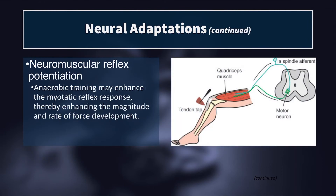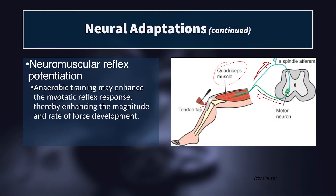We also see improvement in neuromuscular reflexes. The myotatic or stretch reflex enhances activation of agonist muscles. For example, a tendon tap to the patellar tendon rapidly stretches the muscle spindles, sending a signal up the afferent nerve which synapses with the alpha motor neuron to send a signal back to the quads to contract. This reflex is beneficial because it doesn't travel through conscious thought or the motor cortex — it synapses directly at the spinal cord and returns to the muscle automatically. Training can increase the magnitude and rate of force development by enhancing the myotatic reflex response.